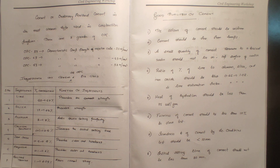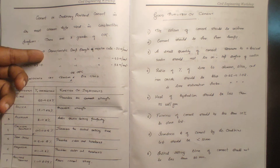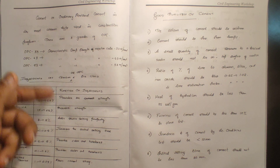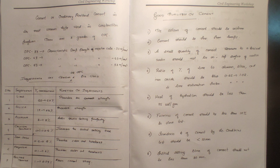There are three grades of OPC — Ordinary Portland Cement — used in the engineering sector: OPC 33, OPC 43, and OPC 53. OPC 33 is the most common type used in construction.